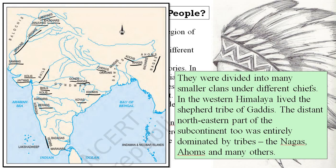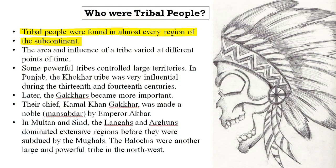Some powerful tribes controlled large territories. In Punjab, the Khokar tribe was very influential — remember this for prelims. Later, the Gakkars became more important; their chief Kamal Khan Gakkars was made a mansabdar (noble) by Emperor Akbar.